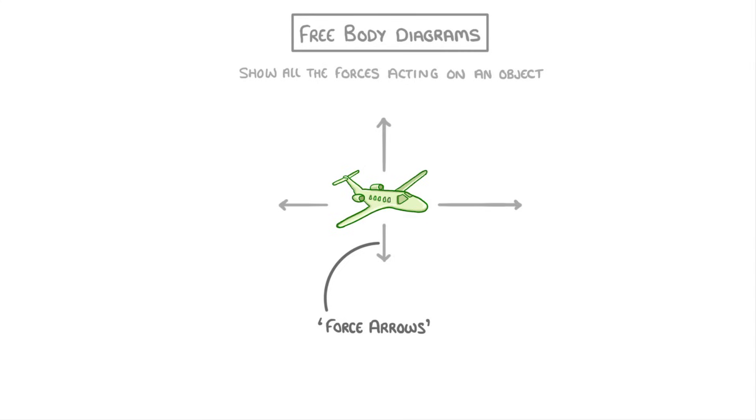So it would have one going forwards, which would be its thrust, one backwards for air resistance or drag, one downwards for its weight, and one upwards for its lift.